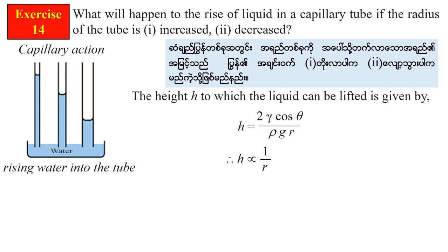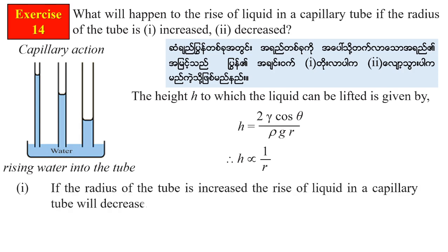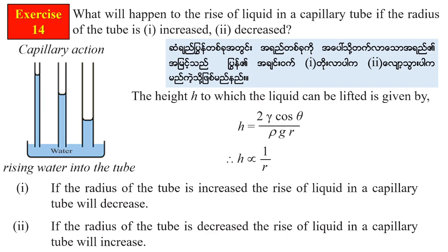The height h is inversely proportional to the radius of the tube. If the radius of the tube is increased, the height of liquid rise in the capillary tube will decrease. If the radius of the tube is decreased, the height of liquid rise in the capillary tube will increase.